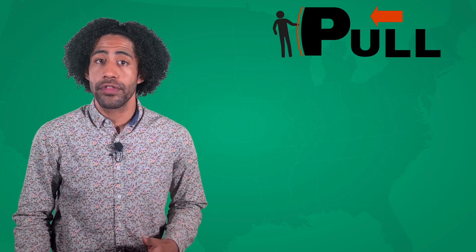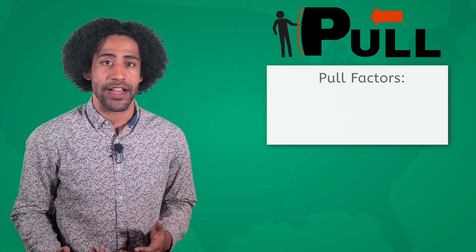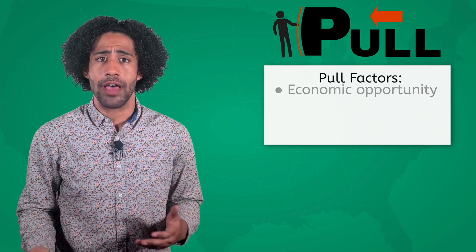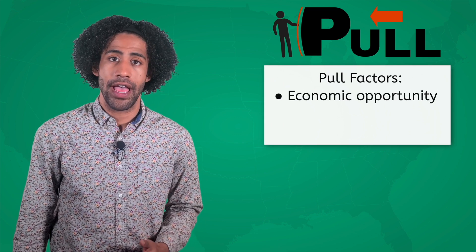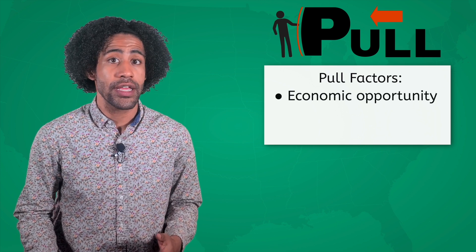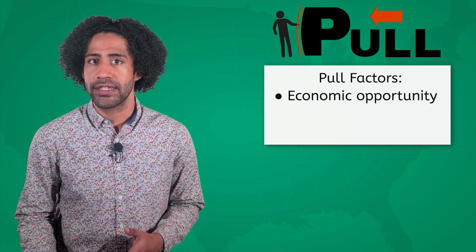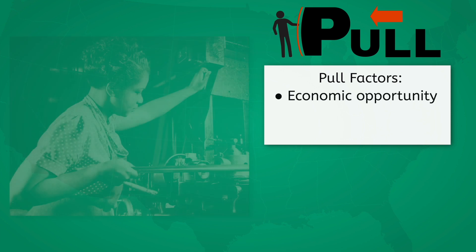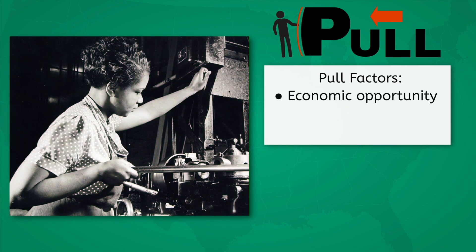The North beckoned with a variety of pull factors. The prospect of economic opportunity was a key motivator, as the surge of industrialization and urbanization in Northern cities created many new jobs. In these cities, Black workers could earn better wages working in factories, compared to the low-paying agricultural jobs in the South.